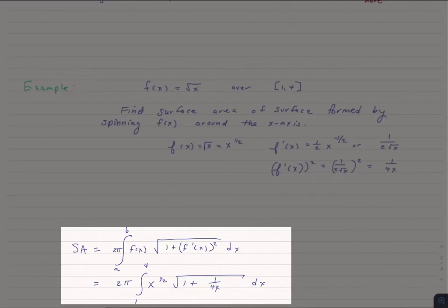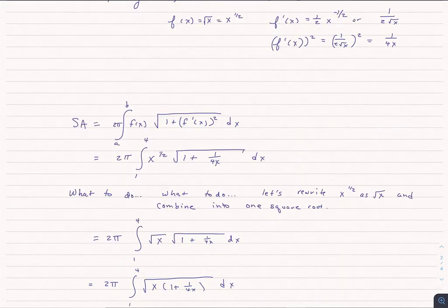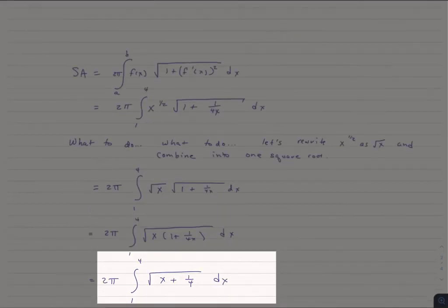So once I do that, I get x to the 1 half times the square root of 1 plus 1 over x dx. Now to make life a little simpler, I'm going to rewrite that x to the 1 half as square root of x, because then I can go ahead and combine the square roots into 1 square root. And when I do that, I get x times 1 plus 1 over 4x, and simply the square root of x plus 1 fourth.